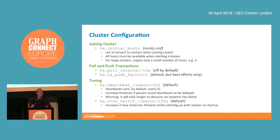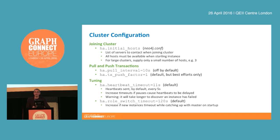The important point is that when the new instance is joining the cluster, all of the instances listed in that parameter have to be available at that point in time. If one of them isn't available, the new instance won't be able to join. A good recommendation is to keep that list relatively small. Once the new instance has started up and joined, it will discover the rest of the topology by connecting to each of those instances.